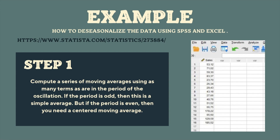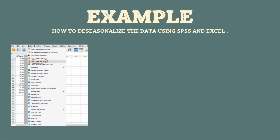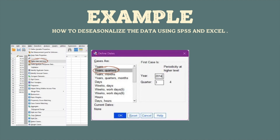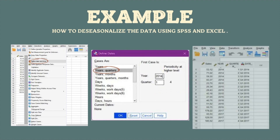To compute the centered moving average in SPSS, we put all the sales numbers in and then go to Data, click Define Date and Time. This option will appear, and because in this Netflix sales case the data has years and quarters, we choose years and quarters, where the year starts from 2014 and the quarter starts from one. After that the data will look like this.